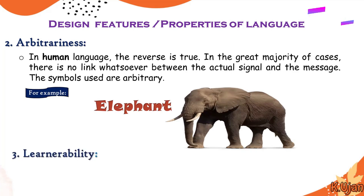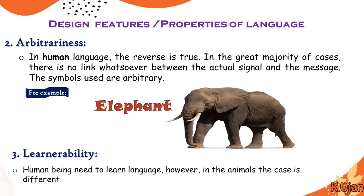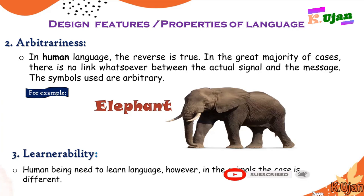According to Charles Hockett, the third property or design feature of language is learnability. Human beings need to learn language; however, in animals the case is different. In human beings there is a system of language and individuals learn it. Animals do not have a sophisticated or developed language system, and thus they need not learn one. The case in human beings is very different.